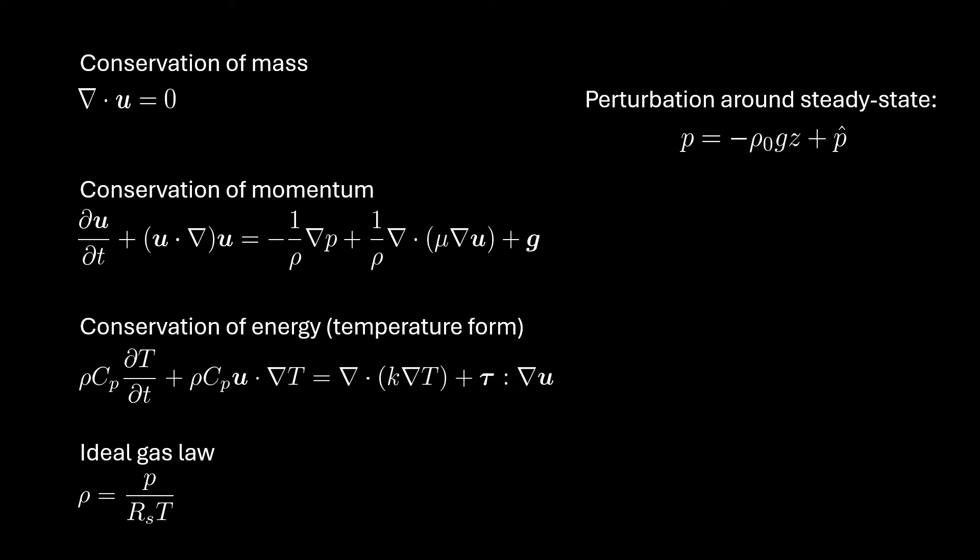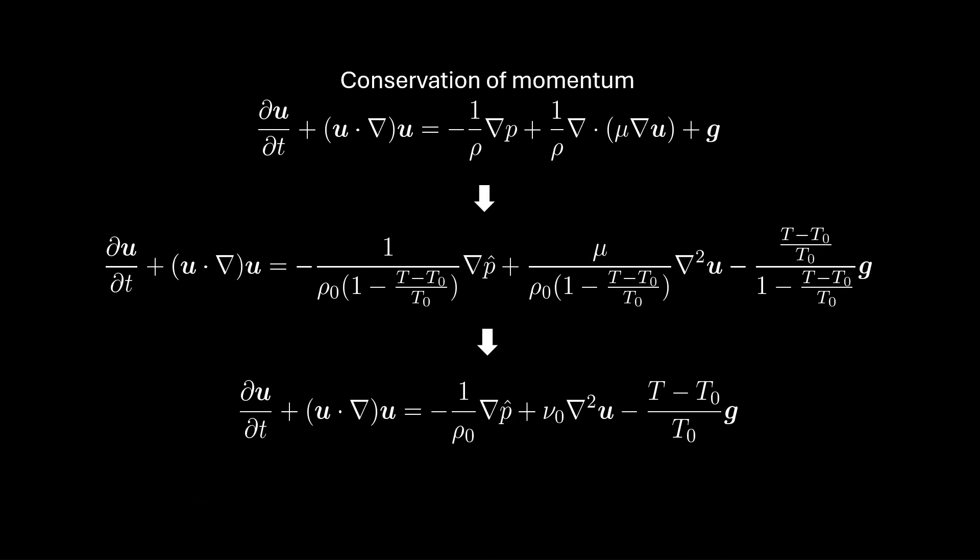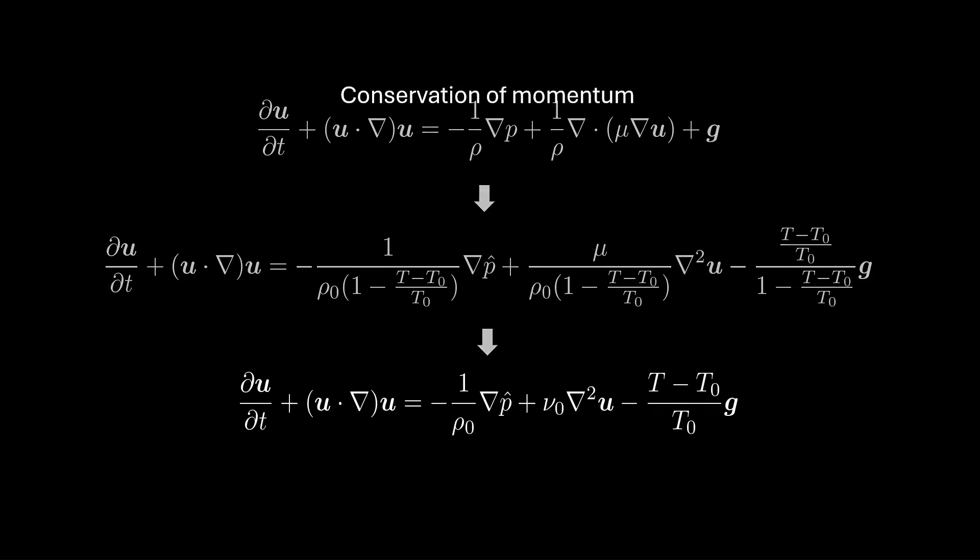The influence of the small temperature variations on the remaining densities is approximated with a first-order Taylor expansion of the ideal gas law. Substituting these two expressions into the momentum equation results in the Boussinesq approximation of the buoyancy force.